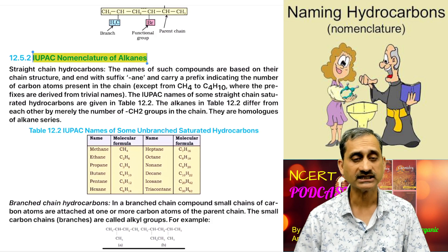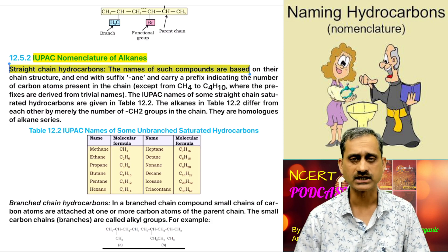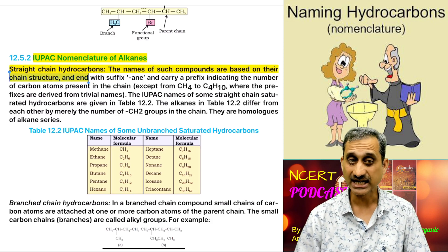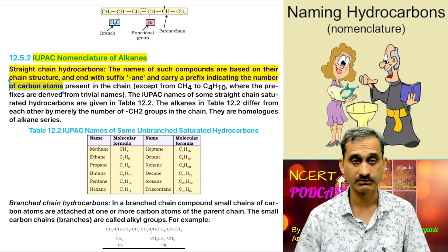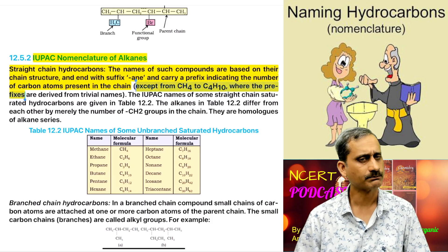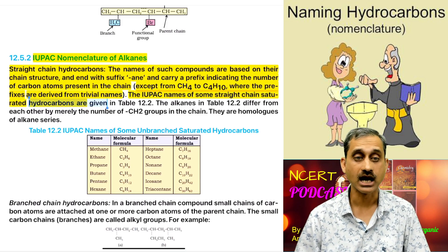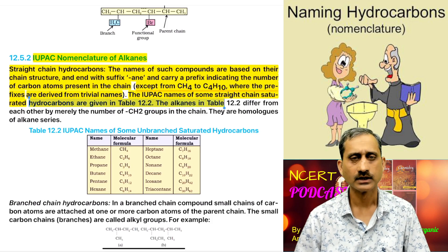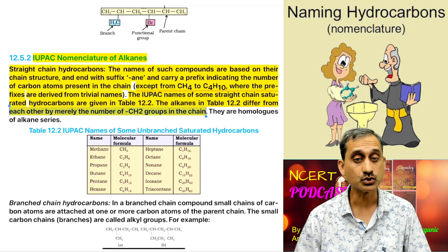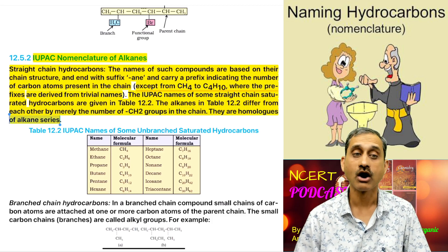IUPAC nomenclature of alkanes — straight chain hydrocarbons: the names of such compounds are based on their chain structure and end with the suffix '-ane', and carry a prefix indicating the number of carbon atoms present in the chain, except from CH4 to C4H10 where the prefixes are derived from trivial names. The IUPAC names of some straight chain saturated hydrocarbons are given in Table 12.2. The alkanes in Table 12.2 differ from each other by merely the number of CH2 groups in the chain — they are homologues of the alkane series.